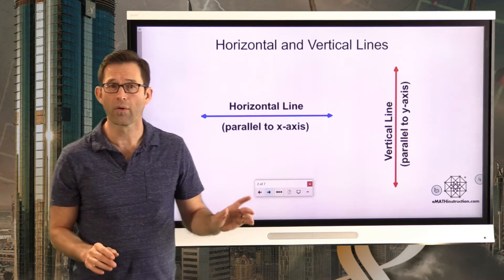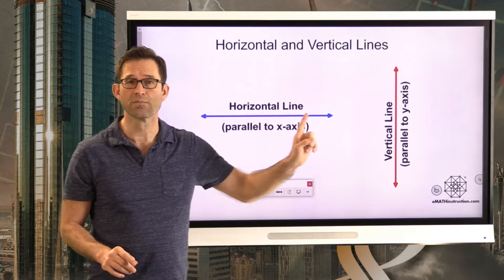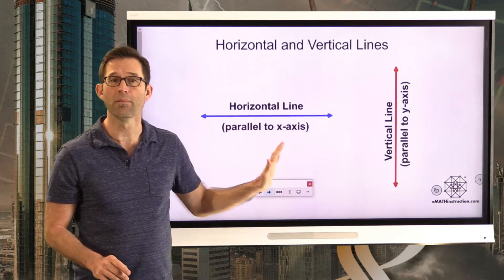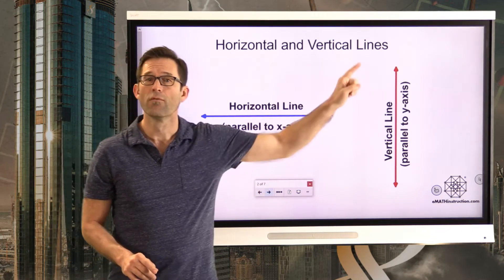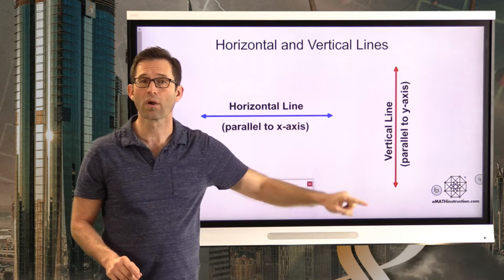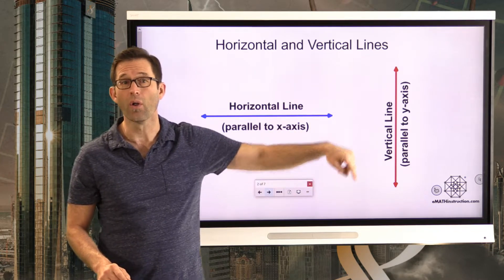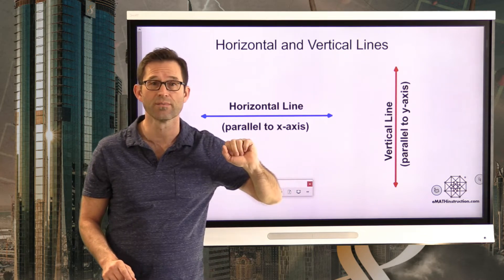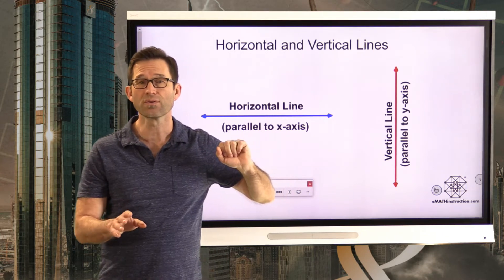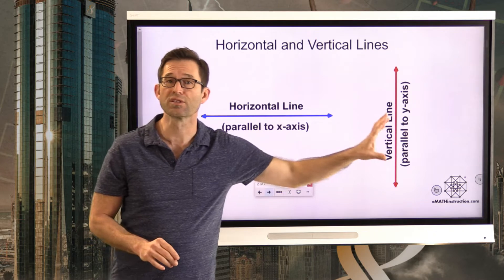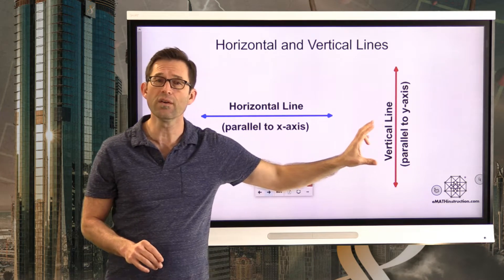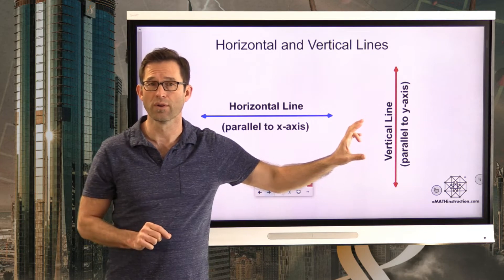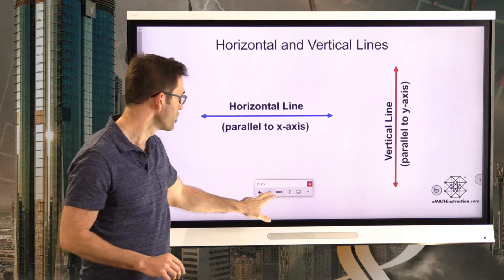Horizontal lines are completely left-right lines and they happen to be parallel to the x-axis. Vertical lines are completely up-and-down lines and they're parallel to the y-axis. In our first exercise what we're going to start to do is explore vertical lines to see if we can describe them with a very, very simple equation. Let's get into that in the first exercise.